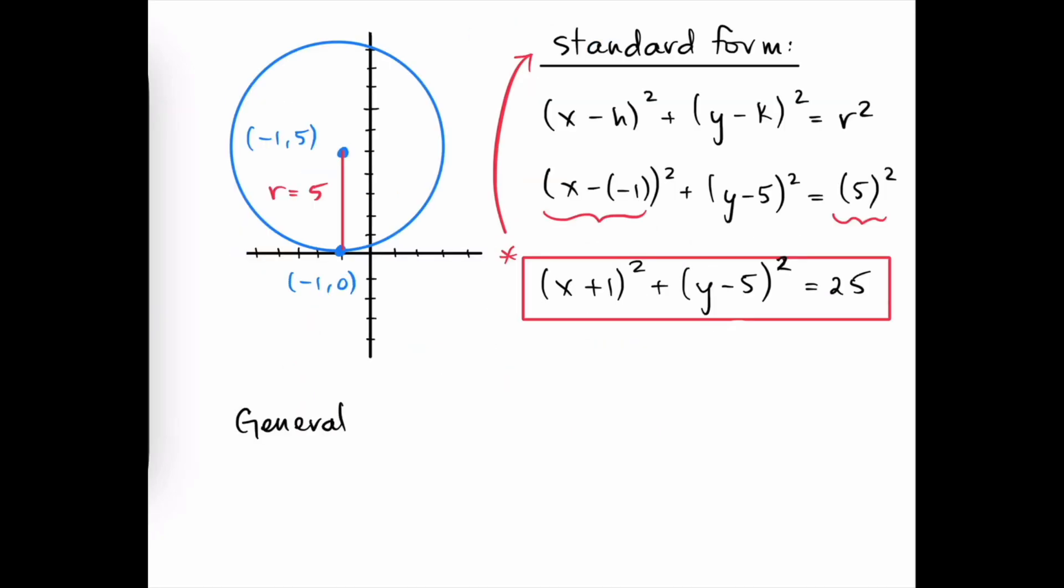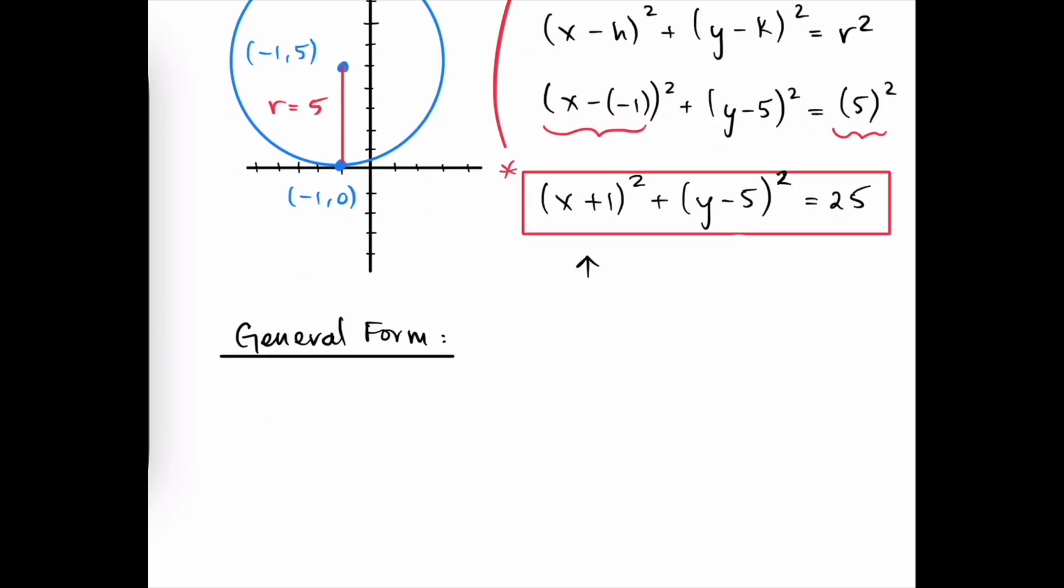To get the equation of this circle in the general form, all we'd need to do is to multiply all of this out and then combine like terms. Let's begin with x plus 1 quantity squared, which is x plus 1 times x plus 1. To multiply this out, we need to FOIL.